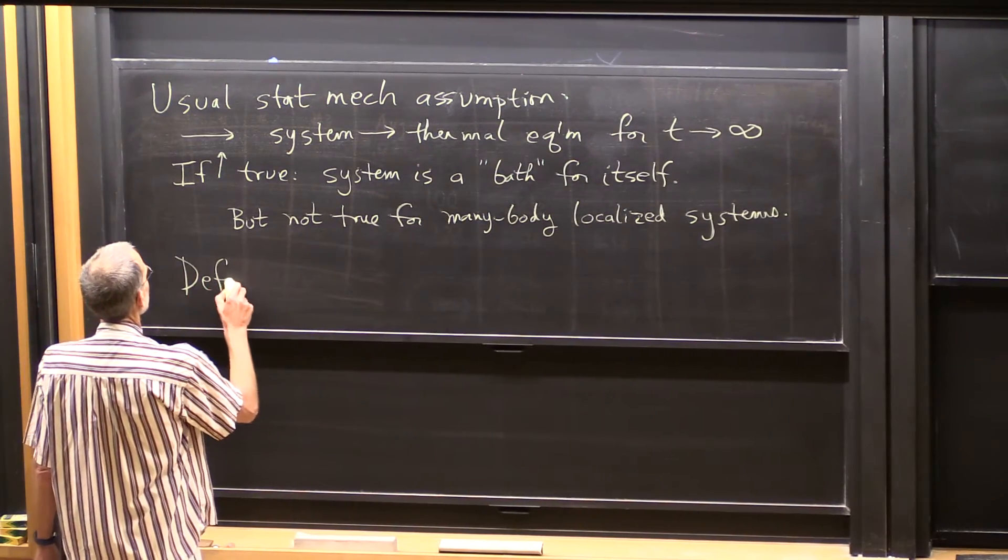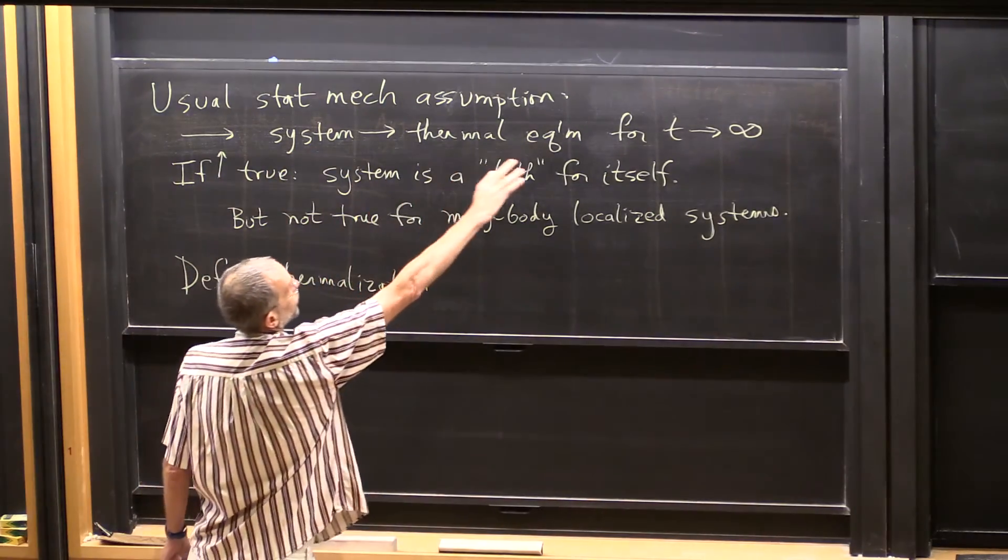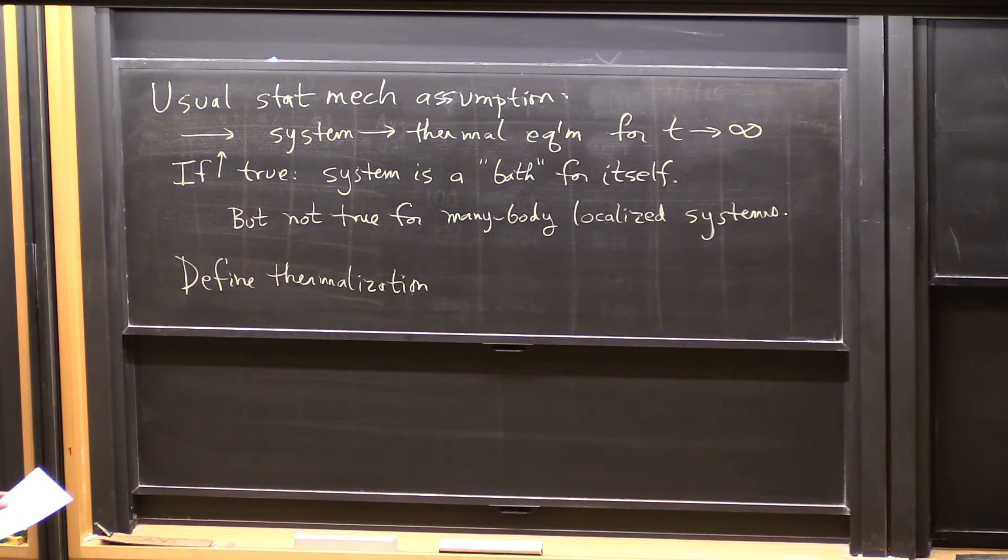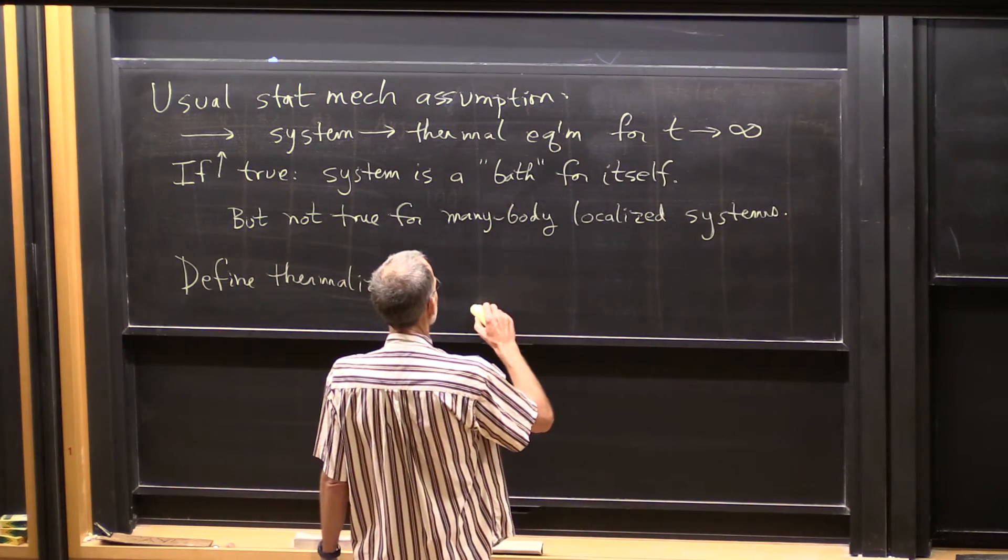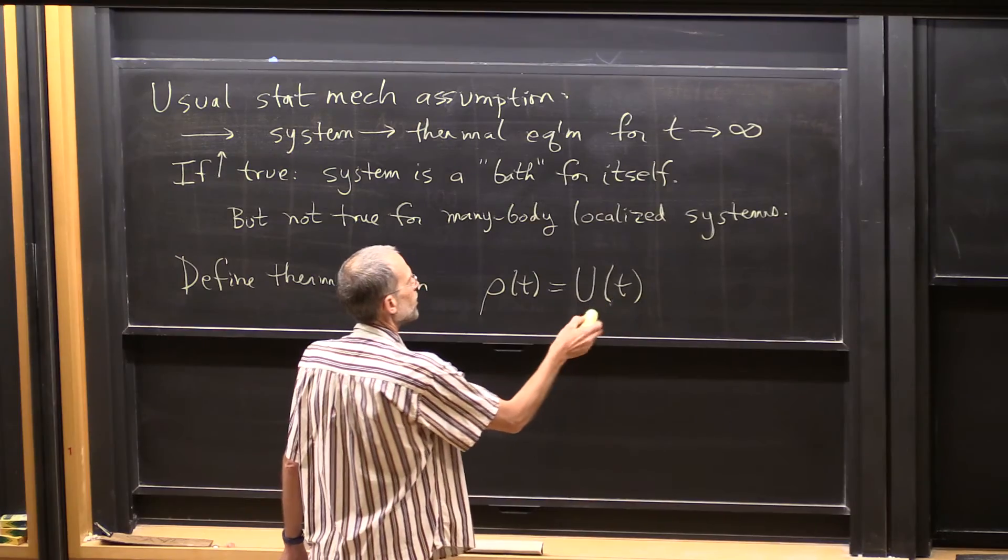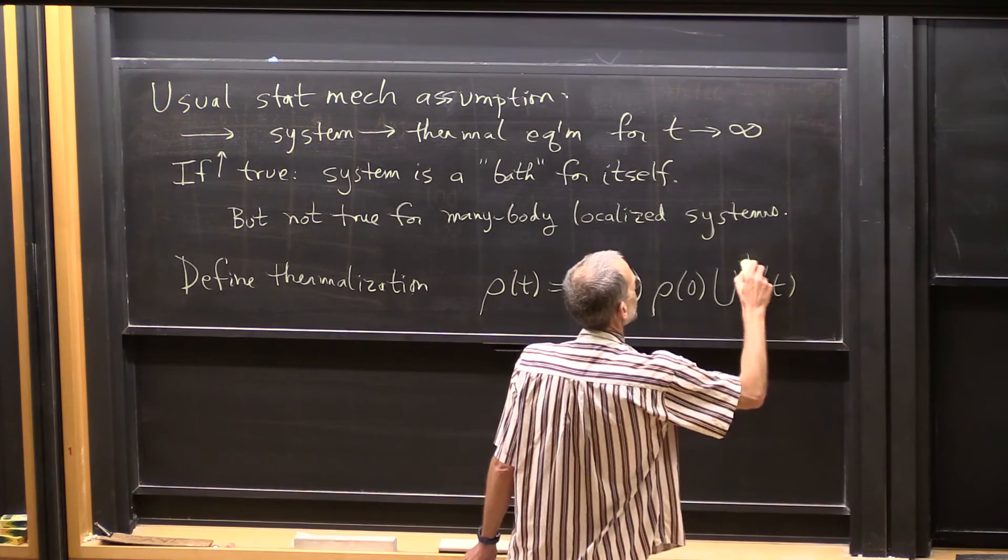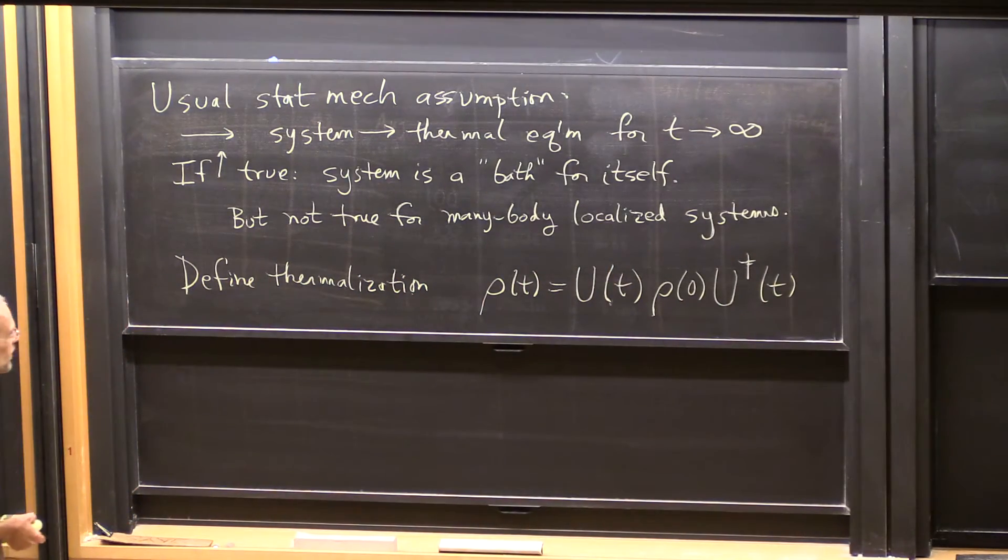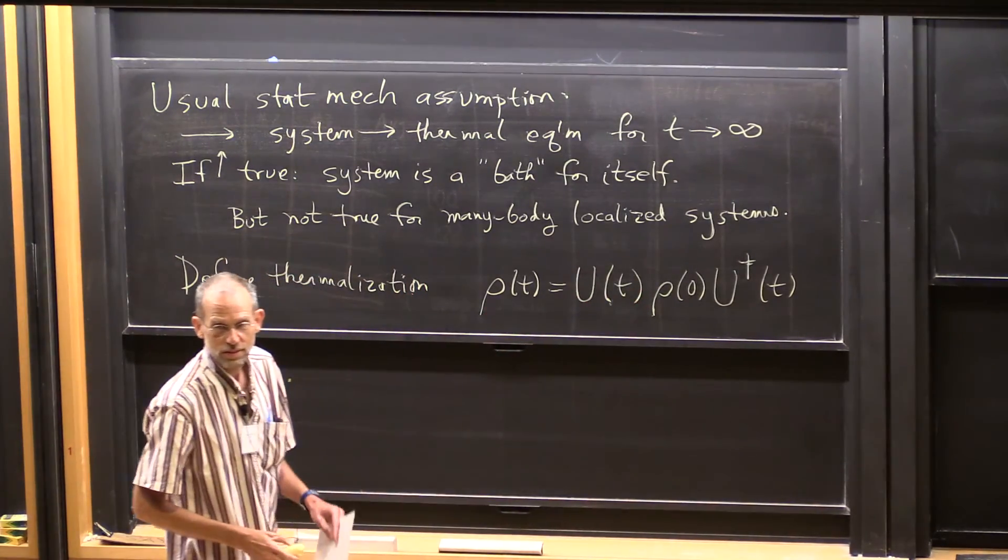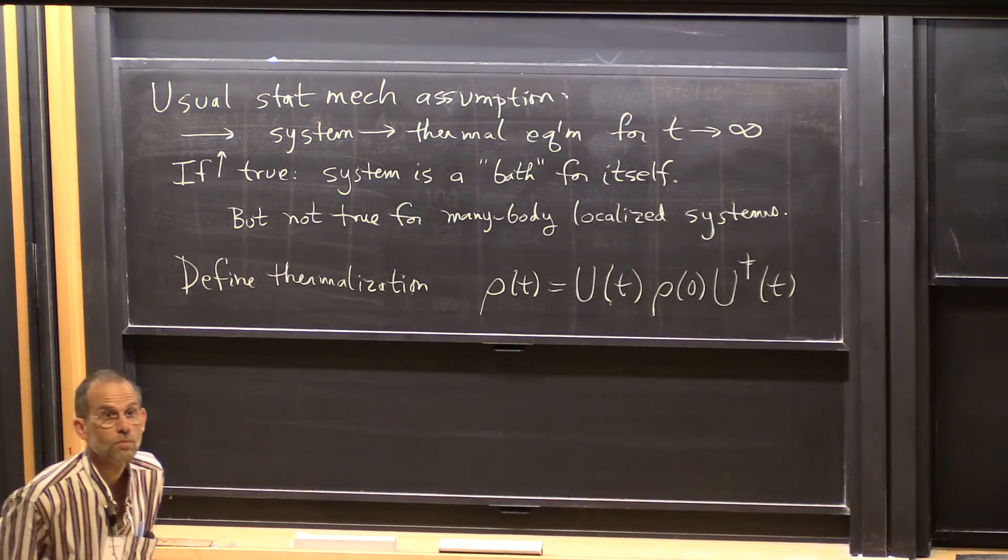So let's define thermalization. The system goes to thermal equilibrium as time goes to infinity. Let's be rather precise about it. Now we know quantum dynamics. The quantum dynamics is just unitary time evolution. So there's some unitary operator which evolves the system from time zero to time t. This is the exact dynamics. The unitary operator is either given by this time independent Hamiltonian or maybe it's given by this time periodic Hamiltonian. This is the exact dynamics of the quantum closed, isolated quantum system.